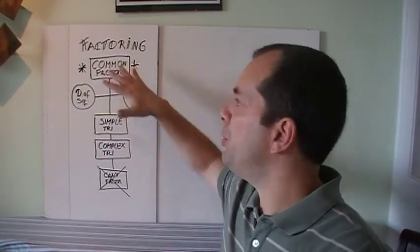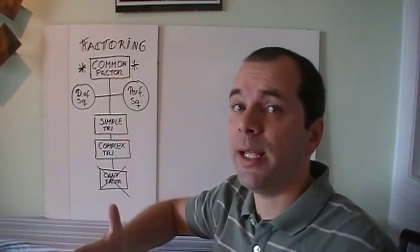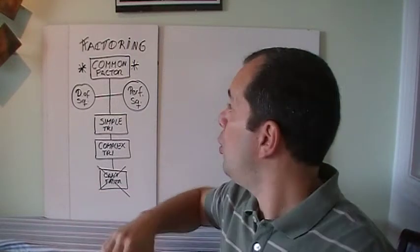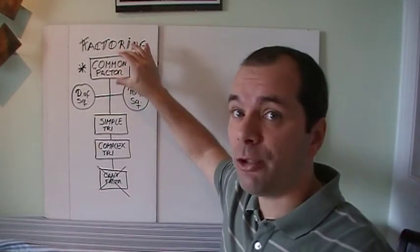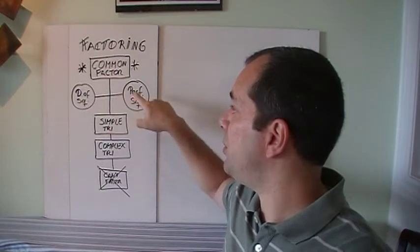So now that we've covered in all previous videos how to do all the factoring, let's see how it would be like if we don't know which case it is. We know that first we check for common factor, always, then we check for difference of squares.